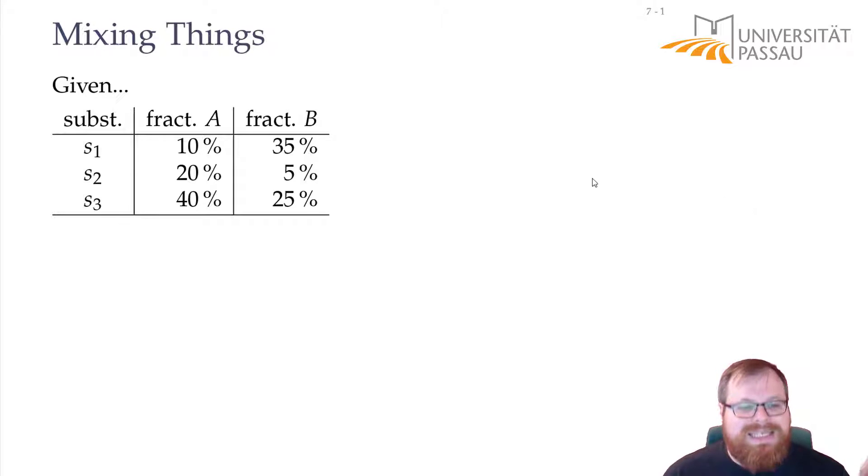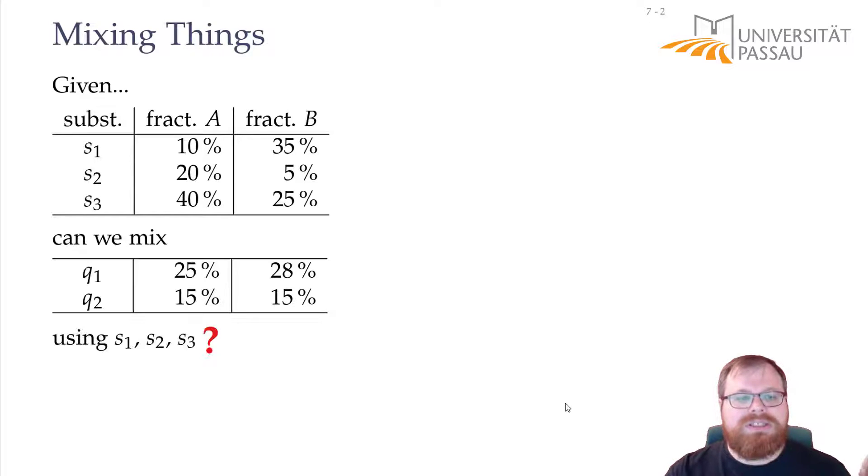Let's have a look at this example. You have three substances, and each of them has a different fraction of the two components A and B. Now you want to mix two new substances with different fractions of A and B. The question is, can you mix these three substances in any way so that you can get component Q1 with 25% A and 28% B, or component Q2 with 15% A and 15% B?